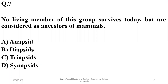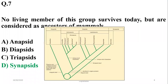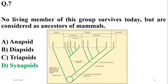Question seven: no living member of this group survives today, but they are considered ancestors of mammals. The ancestors of mammals are synapsids, as shown in the phylogenetic tree — synapsids developed into the mammalian group. The correct option is delta.